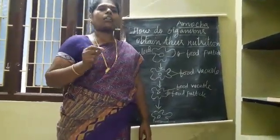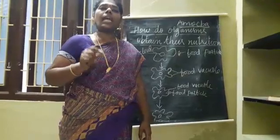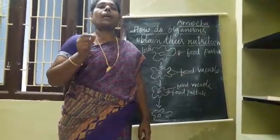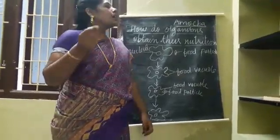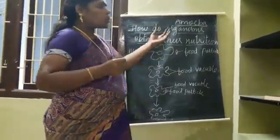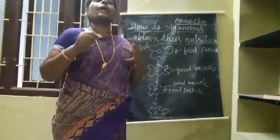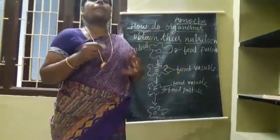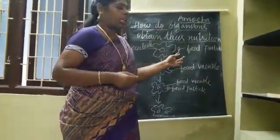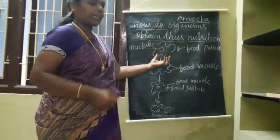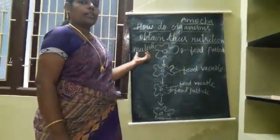It is a tiny organism that can be seen only with the help of a microscope. In the same way, nutrition is different for different organisms. There is the food particle here, that amoeba, that nucleus.